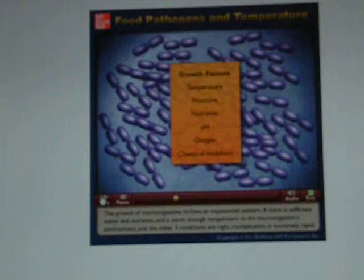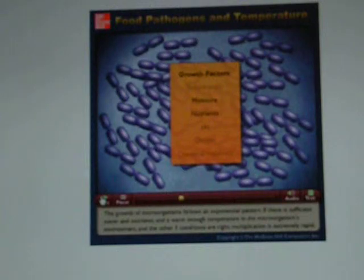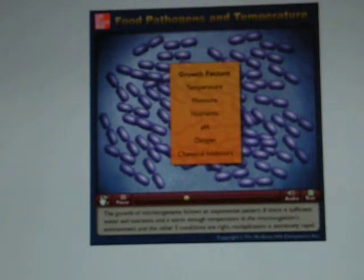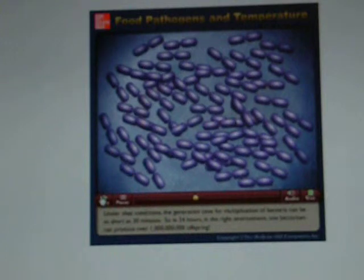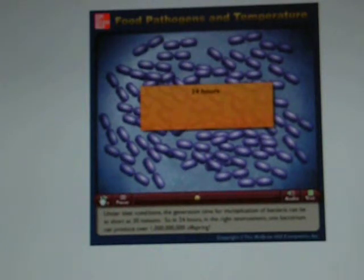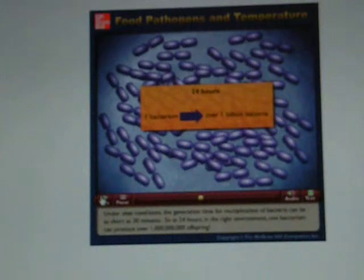The growth of microorganisms follows an exponential pattern. If there is sufficient water and nutrients and a warm enough temperature in the microorganism's environment, and the other three conditions are right, multiplication is extremely rapid. Under ideal conditions, the generation time for bacteria can be as short as 30 minutes. So in 24 hours, in the right environment, one bacterium can produce over one billion offspring.